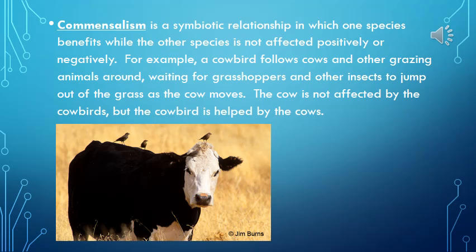Commensalism is a symbiotic relationship in which one species benefits while the other is not affected positively or negatively. For example, a cowbird follows cows and other grazing animals, waiting for grasshoppers and other insects to jump out of the grass as the cow moves. The cow is not affected by the cowbirds, but the cowbird is helped by the cows.